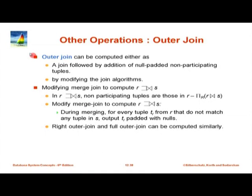Let me wrap up the outer join operation. The outer join can be computed using sorting or hashing. I will focus on sorting since it is easier. Let us do merge join to compute left outer join. We have two already-sorted relations and we step through them.